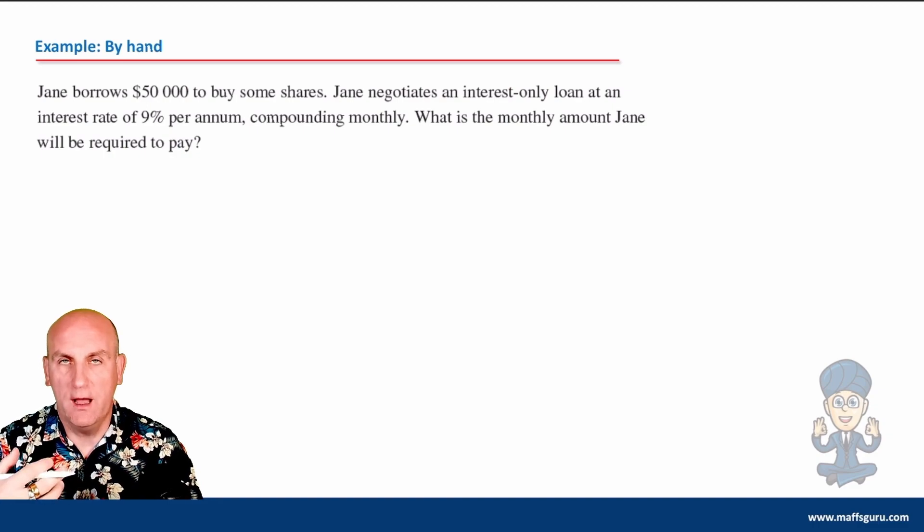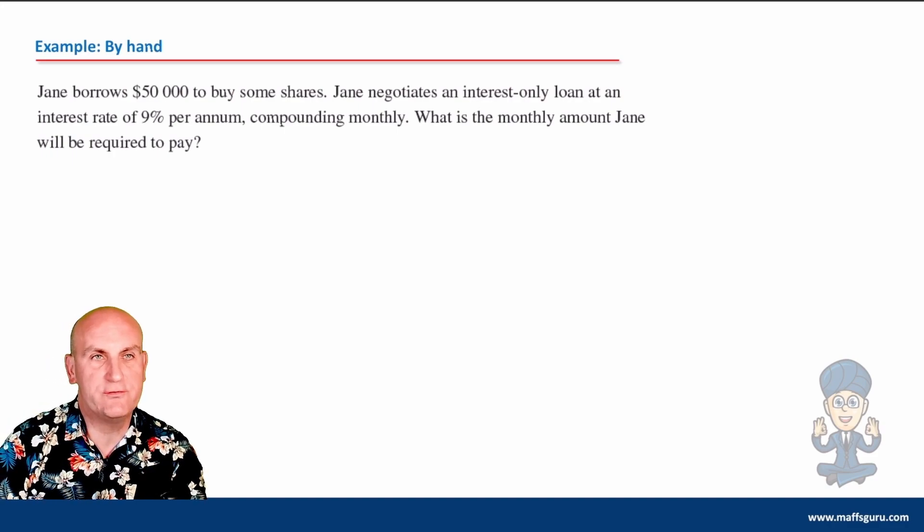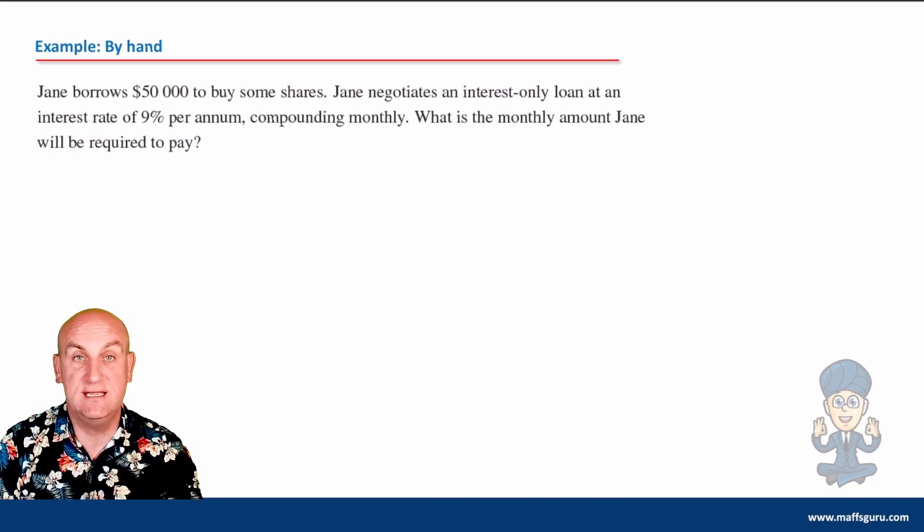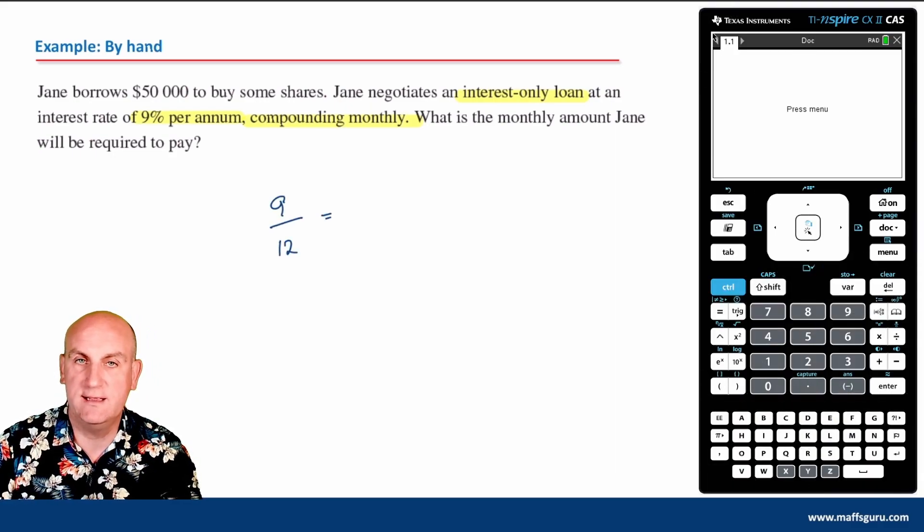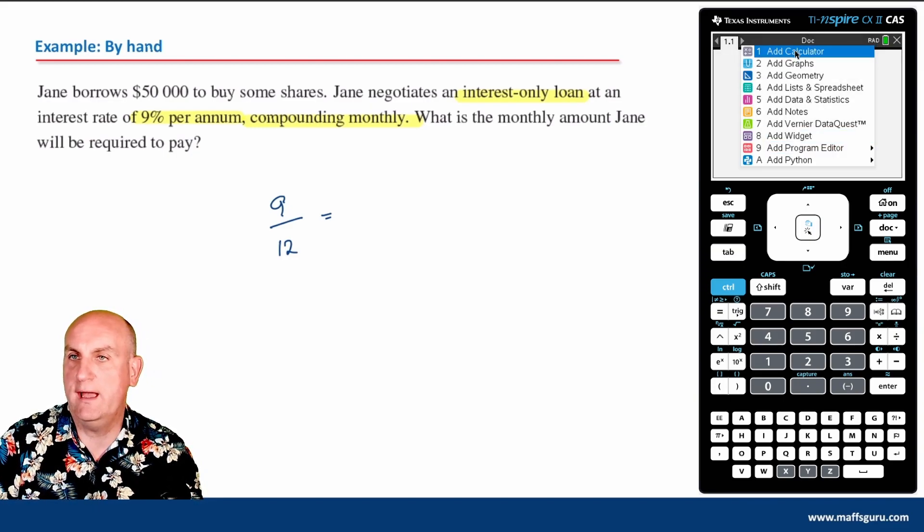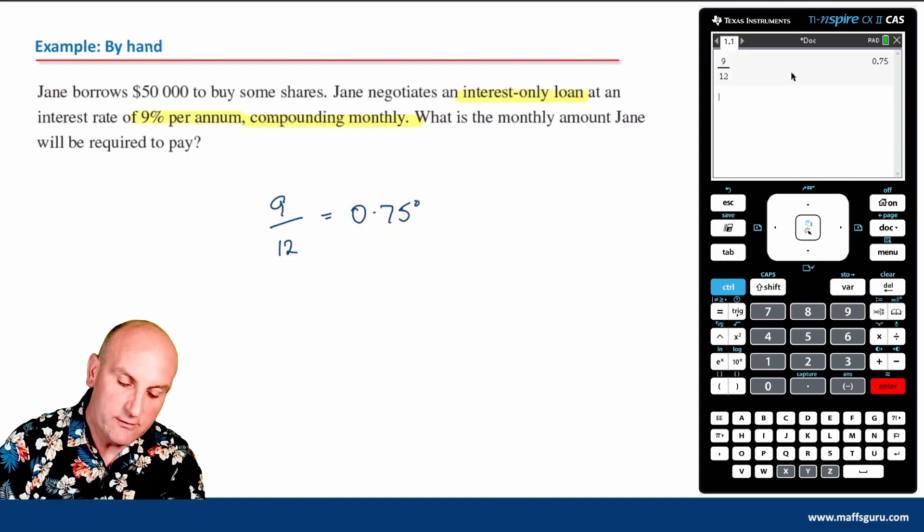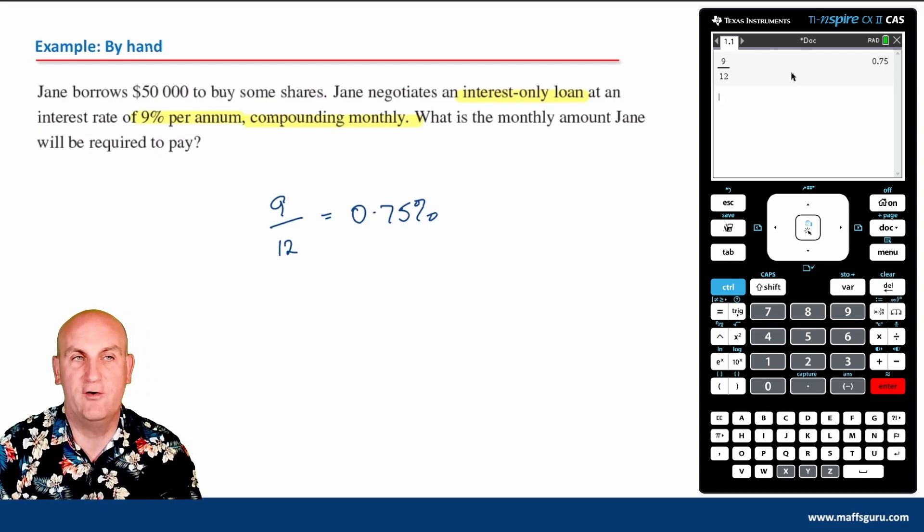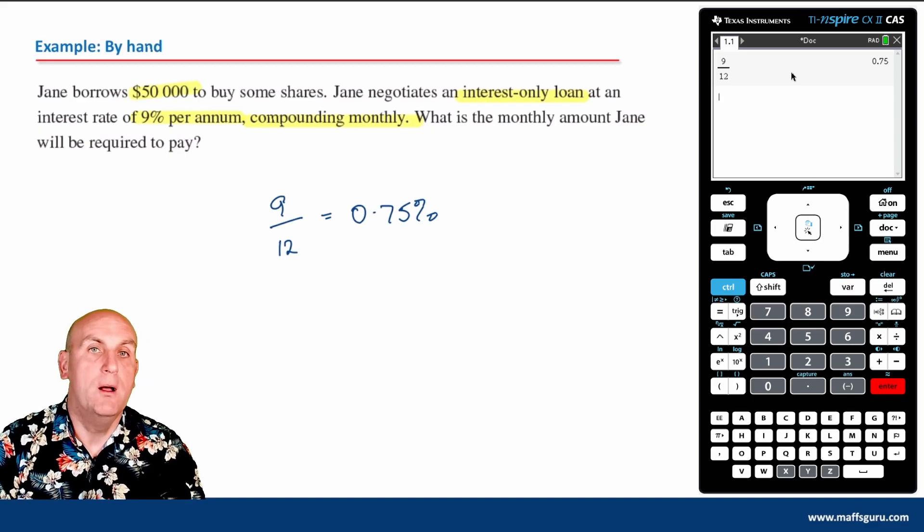Let's look at an example by hand and then use the CAS. Jane borrows $50,000 to buy some shares. Jane negotiates an interest-only loan at an interest rate of 9% per annum compounding monthly. The first thing I'm going to do is 9 divided by 12. Let's hit menu, add a calculator: 9 divided by 12 gives me 0.75%.